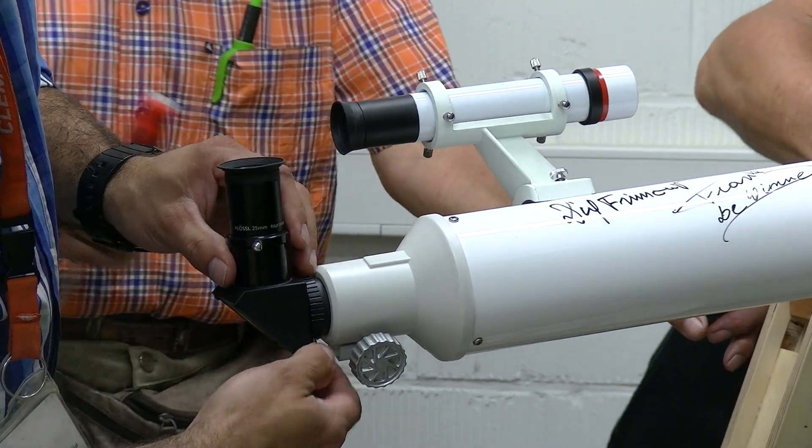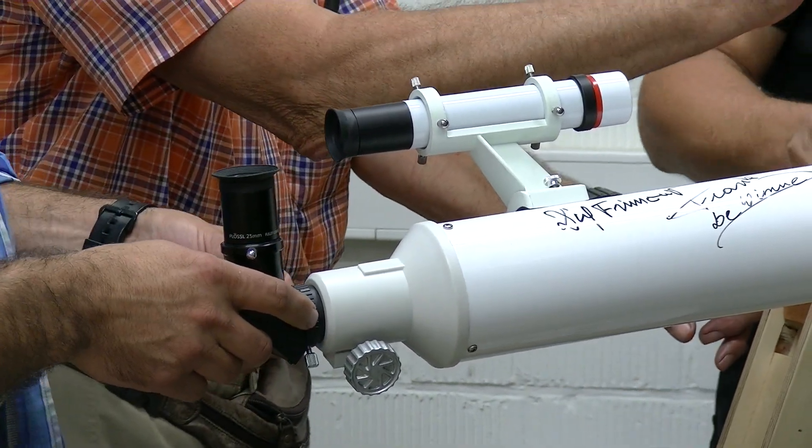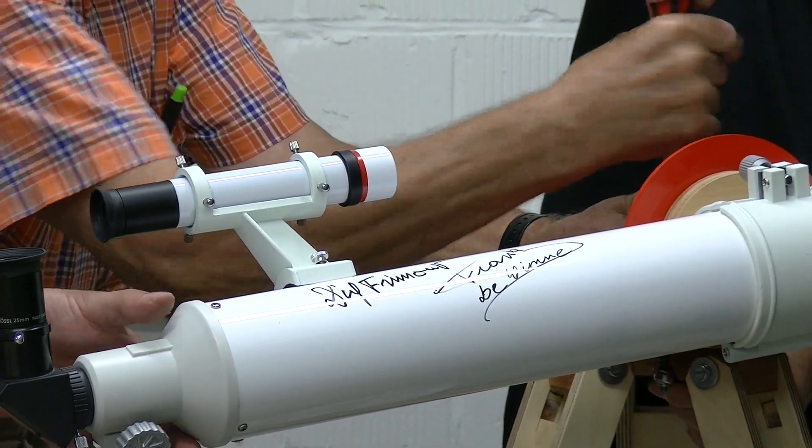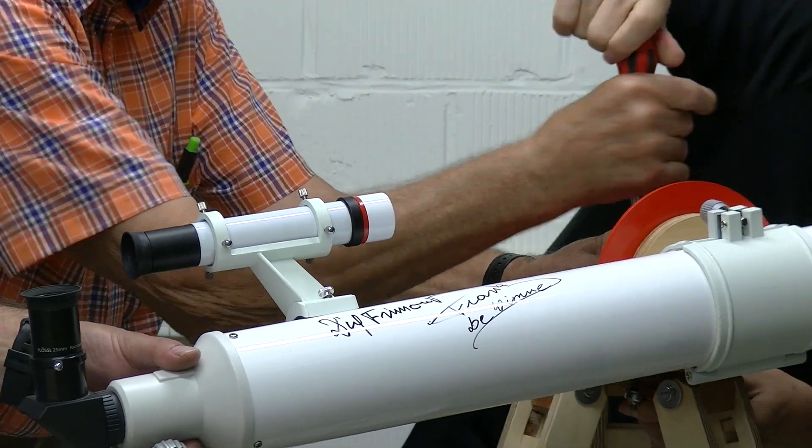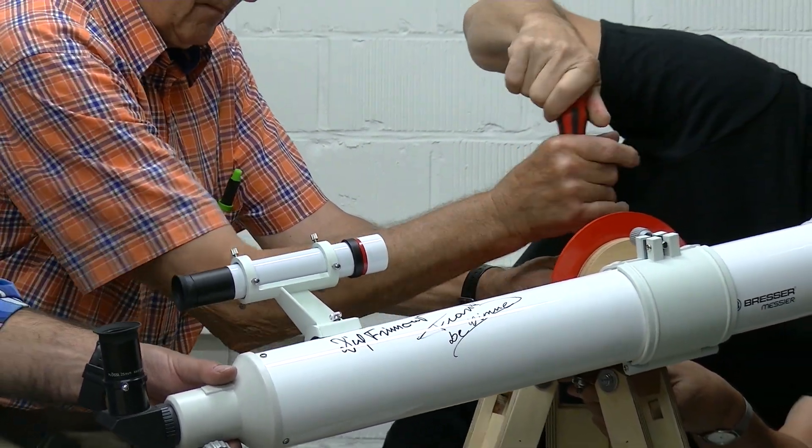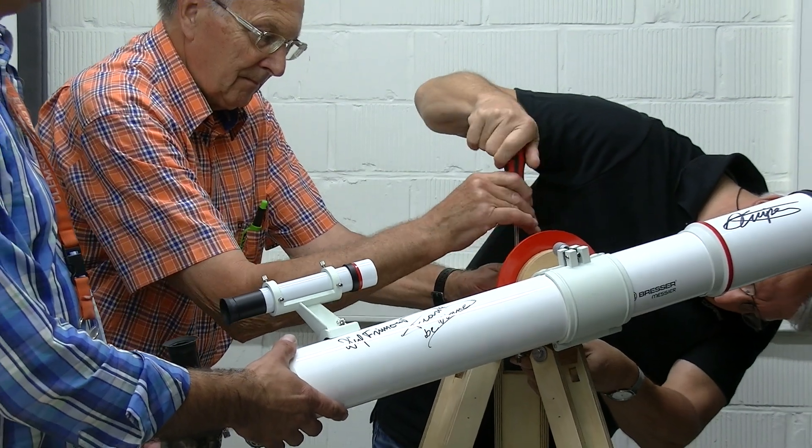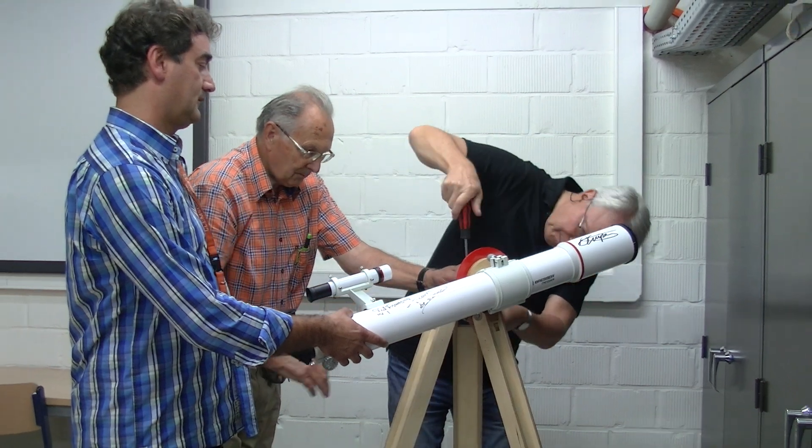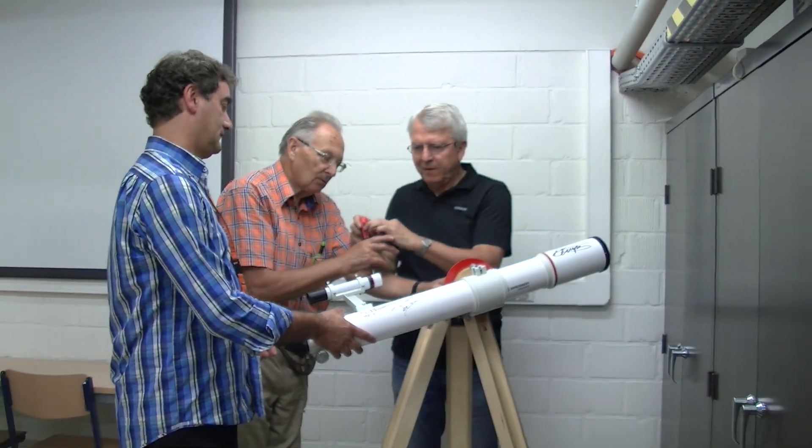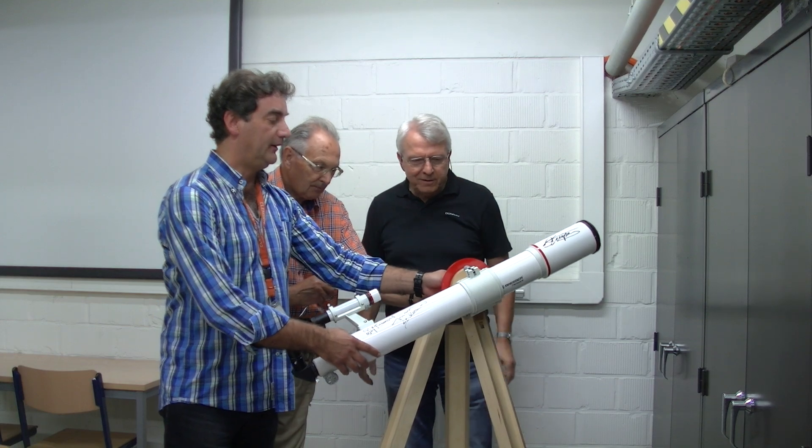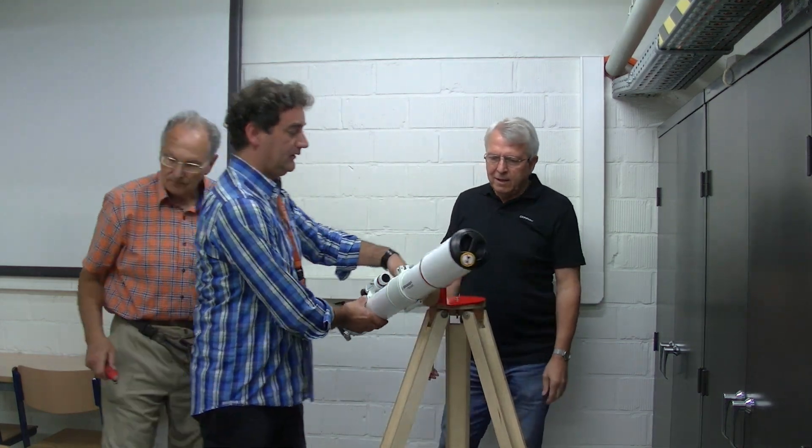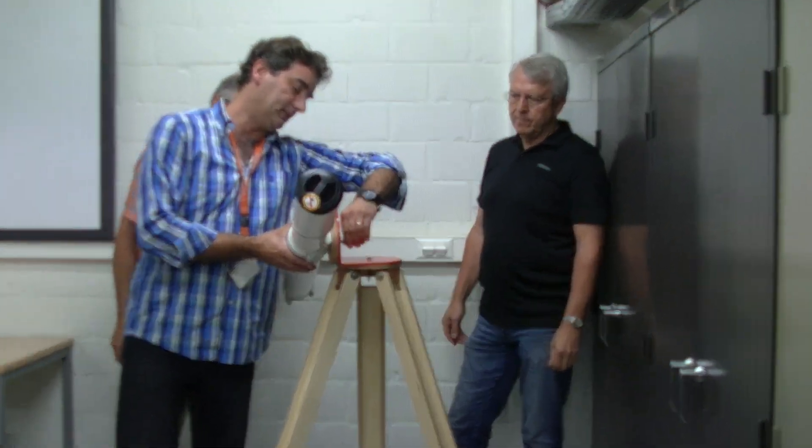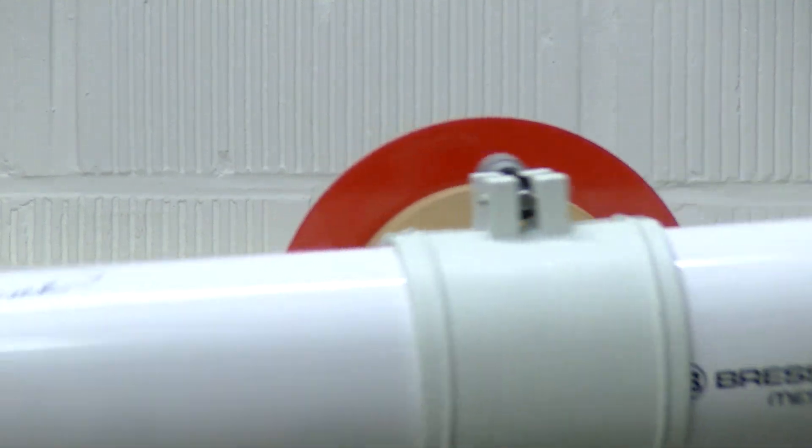Just loosen the screws and then tighten them when it's in place. As you can see, you can always put more tension on the declination, the altitude bracket, by tightening this one. So it's now a working telescope.